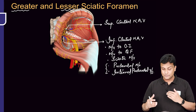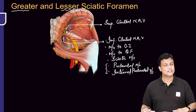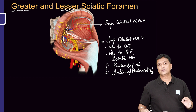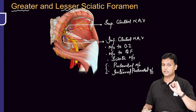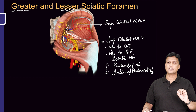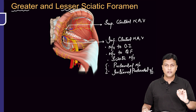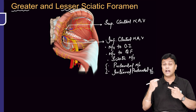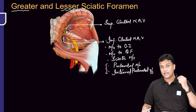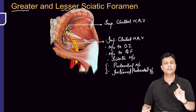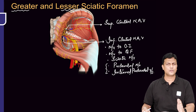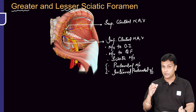So obturator internus tendon will also pass from the lesser sciatic foramen along with those same structures. In this manner, please try to learn this conceptually. In your exams the question being asked is: which nerve is winding around the ischial spine? It is the pudendal nerve — other structures will also be there, but for now remember the pudendal nerve is winding around the ischial spine.